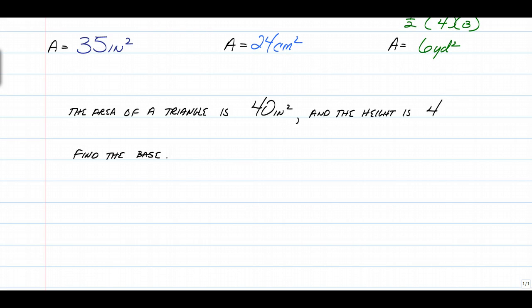One working backwards problem. So the area of the triangle is 40. So if area is equal to one half the base times the height and we're given that the area is 40, then we just have half the base times height.